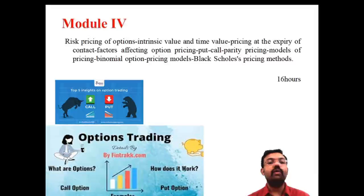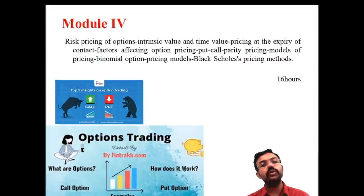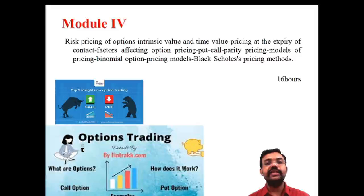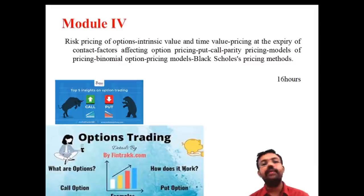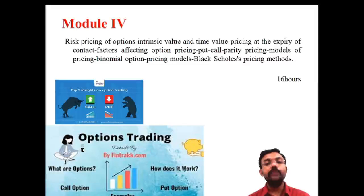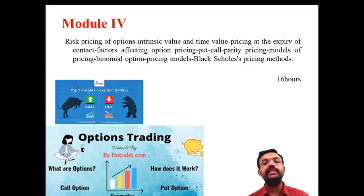We discuss in-the-money and out-of-the-money options, and we use the binomial option pricing and Black-Scholes pricing methods. The fourth module content is a continuation of the option market, relating to risk pricing and how options relate to marketing strategy — specifically the binomial options model and the Black-Scholes model. Normally, 16 hours are allocated for the fourth module.